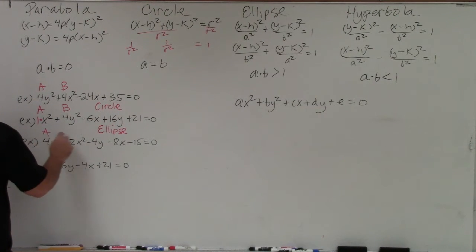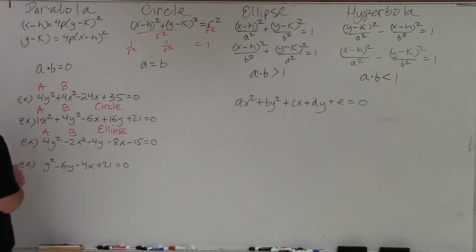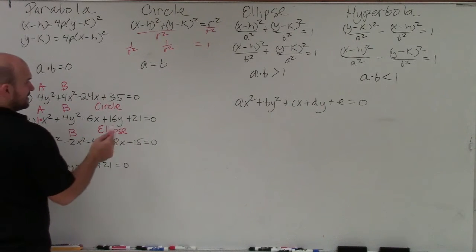The next one, I have a and b. Obviously, you can see this one. They're not the same, so it's not the circle. They don't multiply to give you 0. And when you multiply them, 4 times negative 2, you're going to get a number that's less than 1.